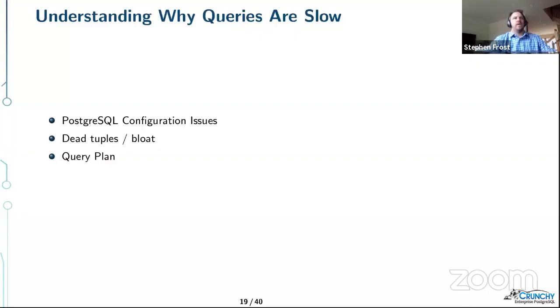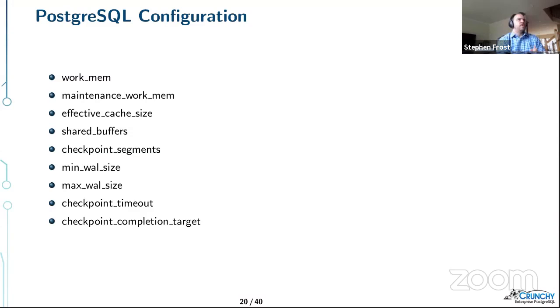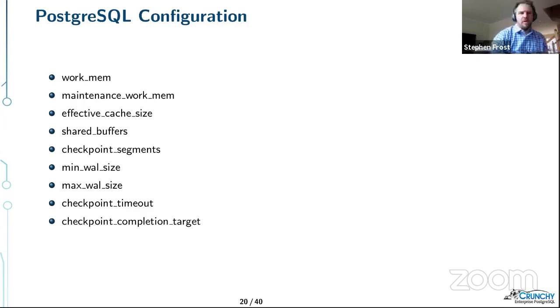Now let's talk about different reasons queries might be slow: configuration issues, dead tuples and bloat, and query plans. We'll go through various Postgres configuration options.